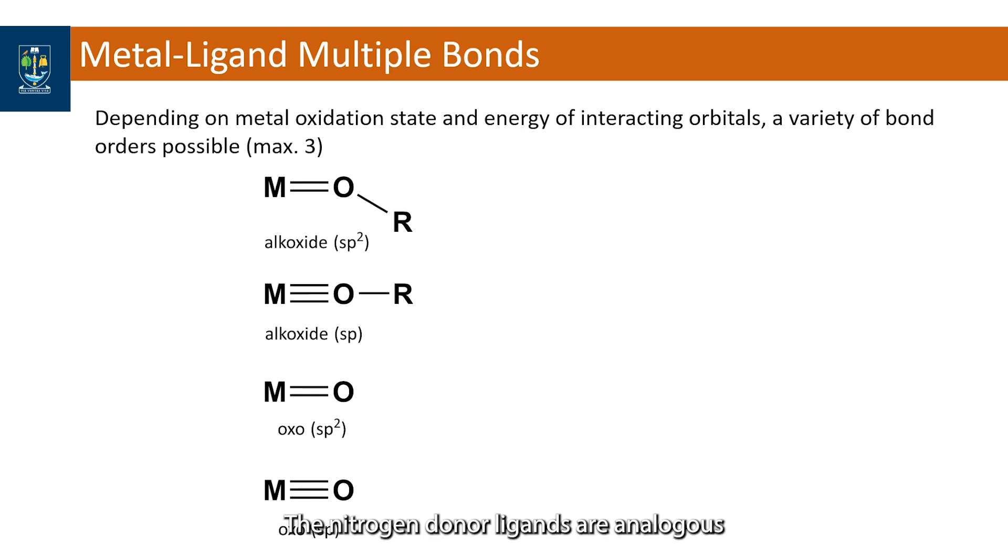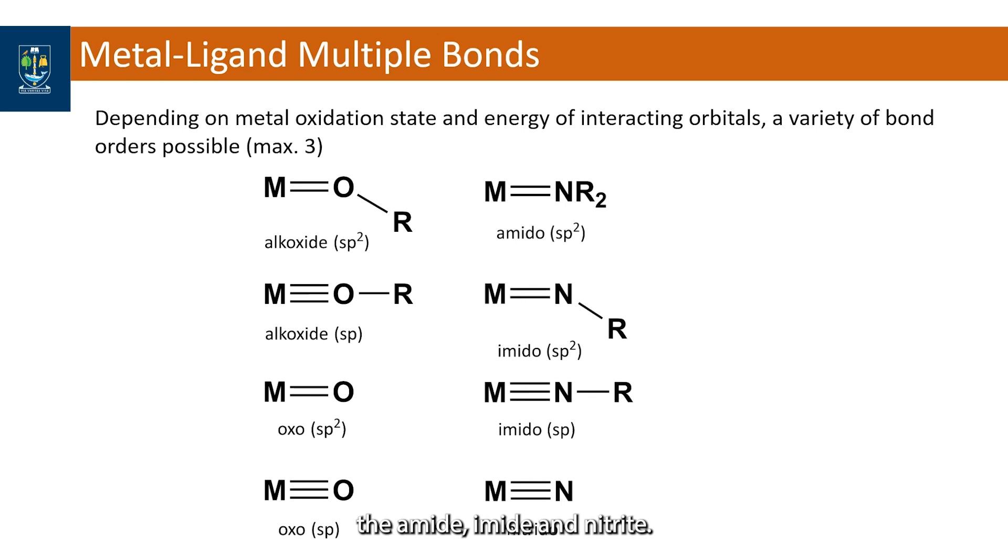The nitrogen donor ligands are analogous, the amide, imide and nitride. And multiple bonds conform with the carbenes alkylidene and alkylidyne.